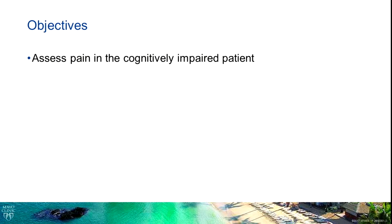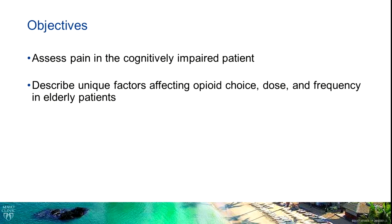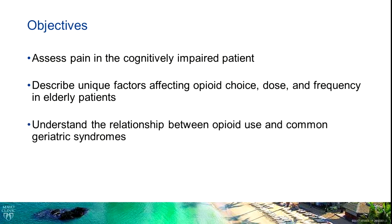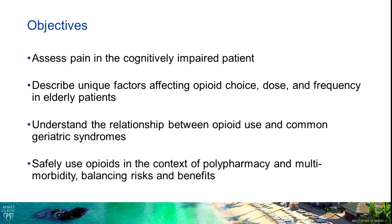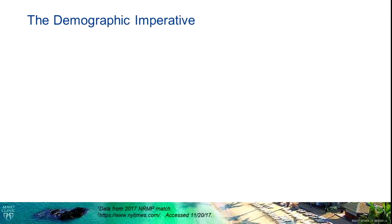I hope at the end of today's talk that you'll feel comfortable assessing pain in cognitively impaired patients, that you'll be able to describe some unique factors in older patients that affect opioid choice, dose, and frequency, that you understand the relationship between common geriatric syndromes and opioid use, and that you'll feel comfortable safely using opioids within the context of multi-morbidity and polypharmacy.